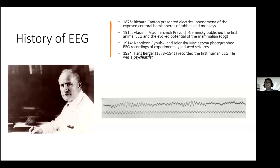Ironically, Dr. Hans Berger was actually a psychiatrist — but nowadays psychiatrists don't do EEG, which is a big surprise. This picture shows Dr. Hans Berger and an EEG recording that shows the alpha rhythm. Alpha rhythm was also known as 'Berger's rhythm,' named after him.